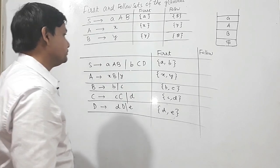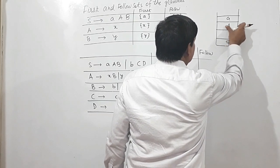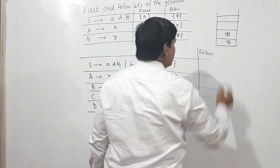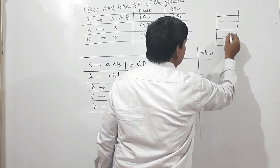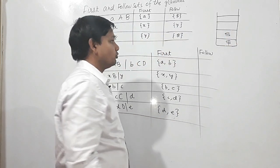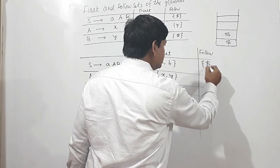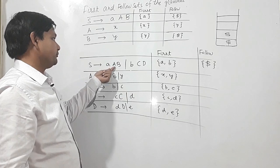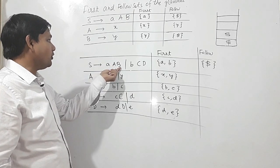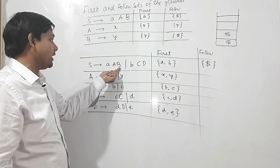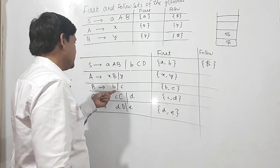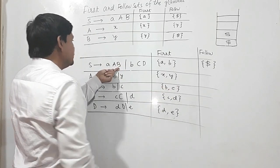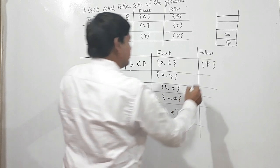For Follow sets: Follow of S is always dollar, so I am writing dollar here. Follow of A — from the production S→AB, A is followed by B. So I need B's First, which is {b, c}. Therefore Follow of A will be {b, c}.